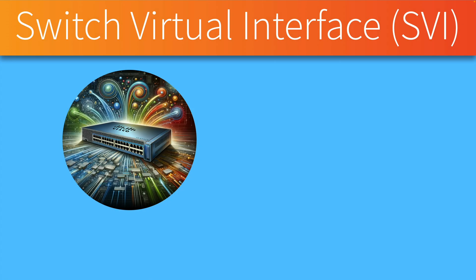Do you have a Layer 3 Cisco Catalyst switch? If so, you're going to see in this video how you can route traffic from one VLAN to another VLAN. Enter VLAN routing with SVIs — Switch Virtual Interfaces. That's our focus in this video.